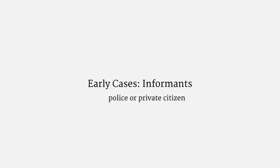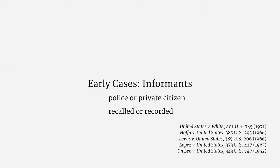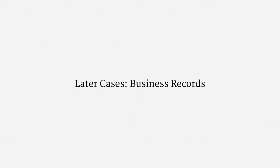The rough idea is that information volunteered to a third party is exempt from Fourth Amendment protection. The early cases in the Third Party Doctrine involved informants. The Supreme Court held, consistently, that disclosures to informants were not covered by the Fourth Amendment. It didn't matter if the informant was a police officer or even a private citizen, or if the conversation was recalled or even recorded — so long as the conversation was voluntary, there was no constitutional issue.